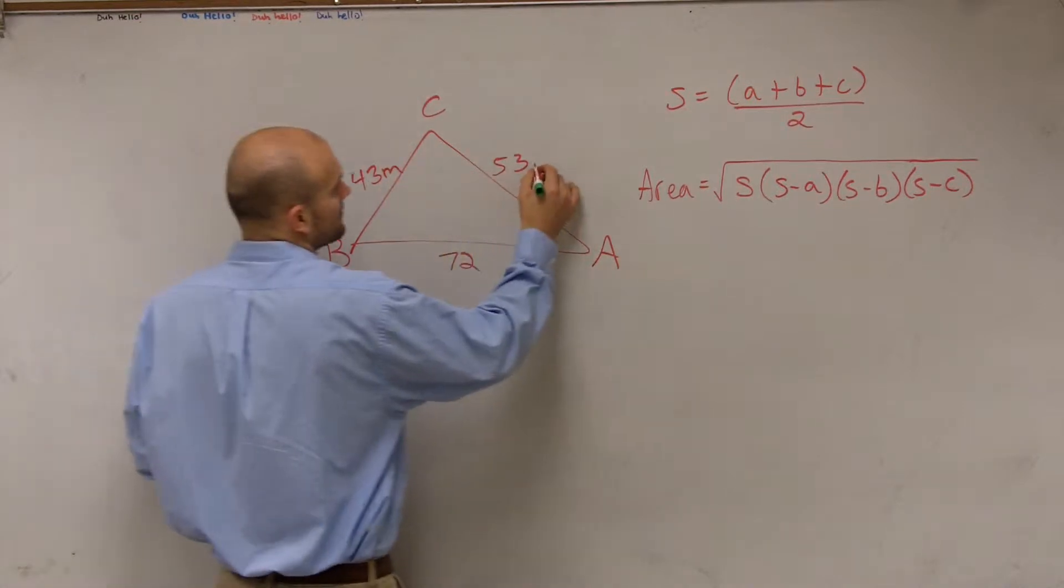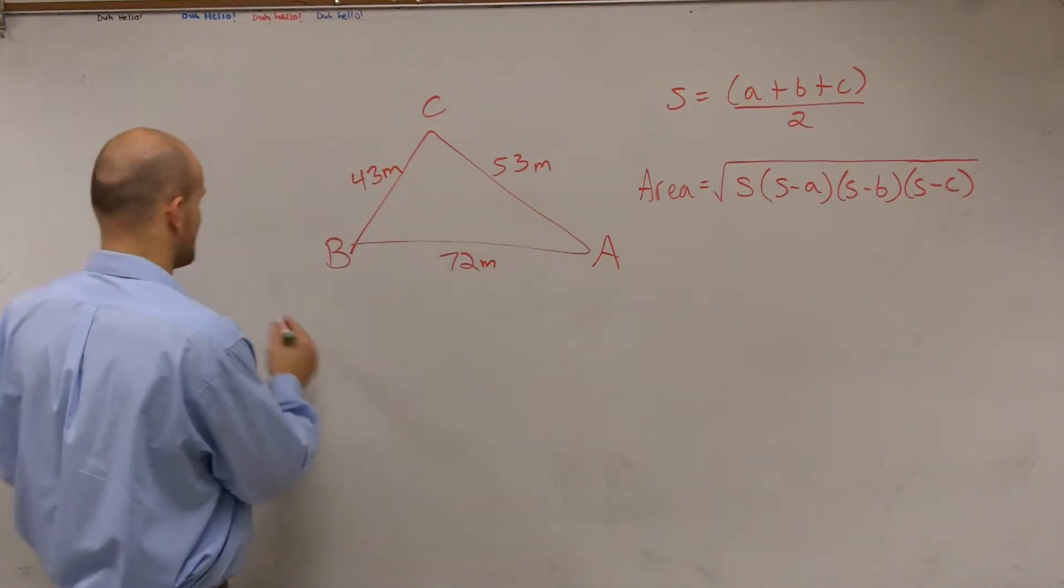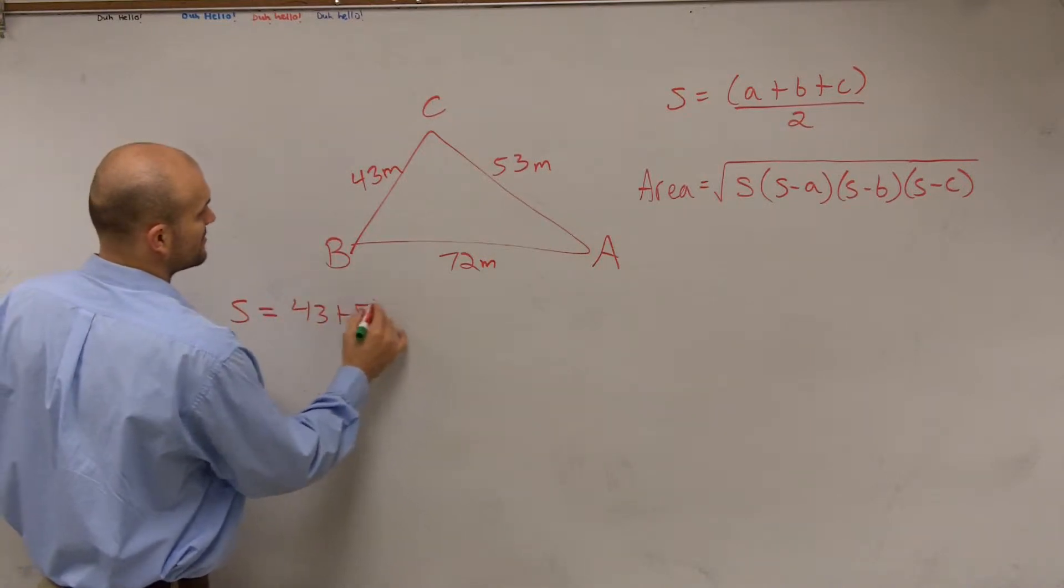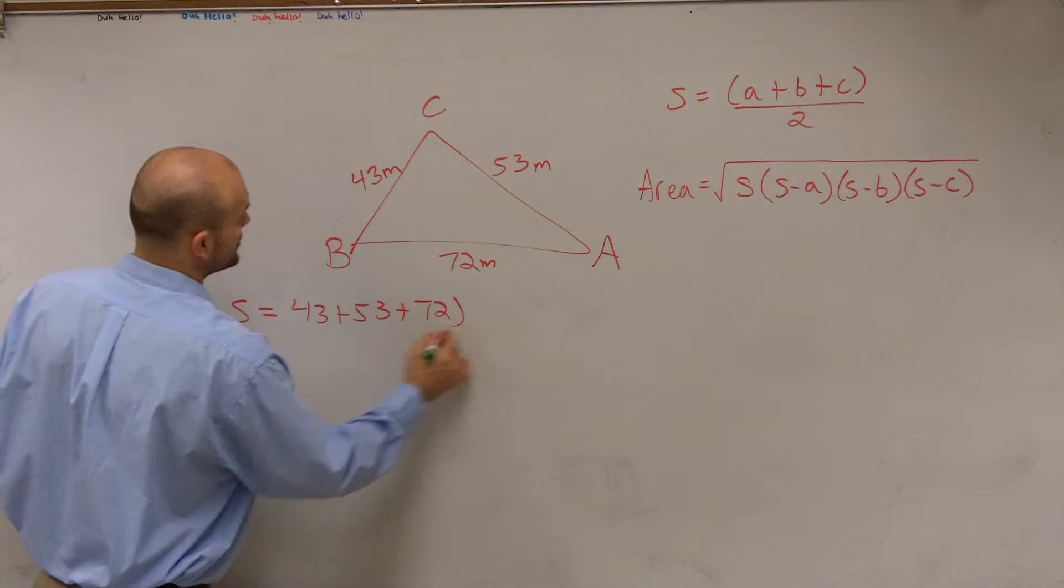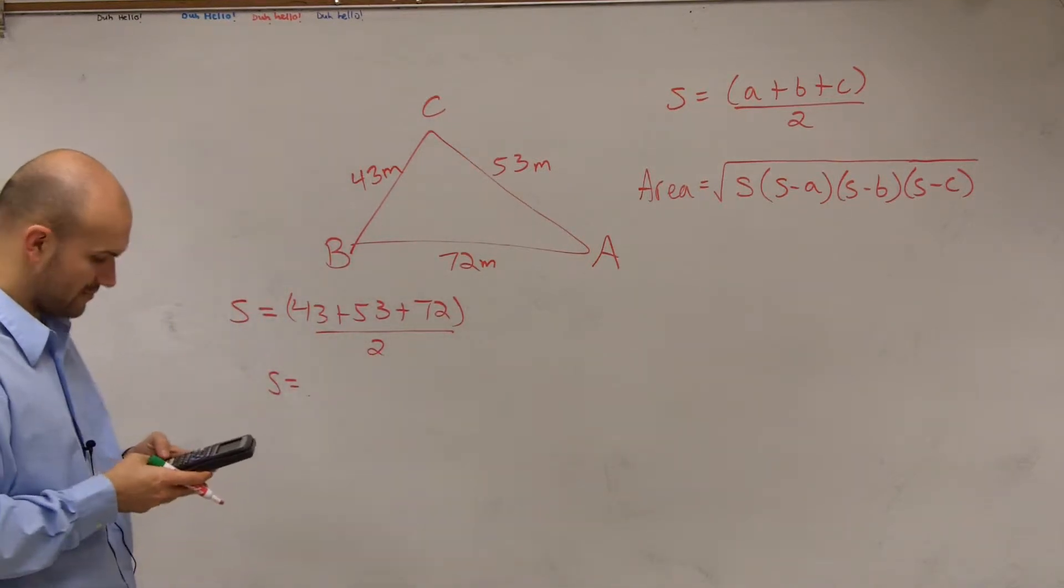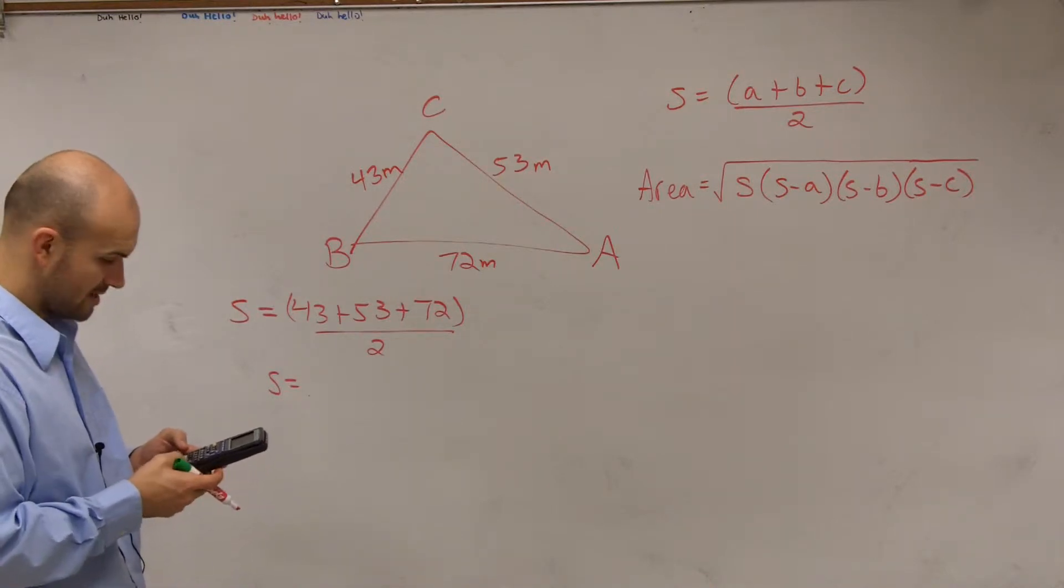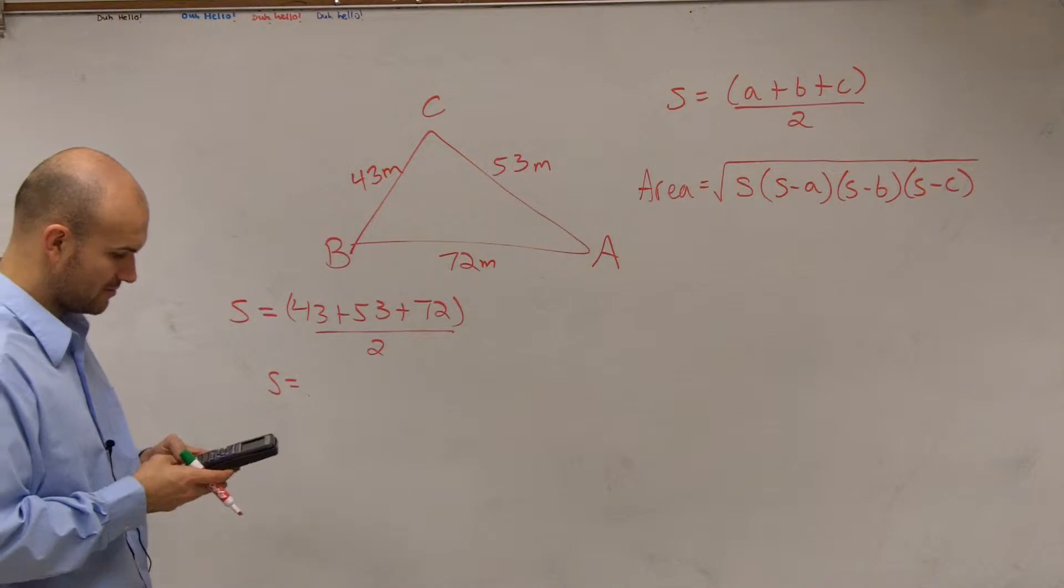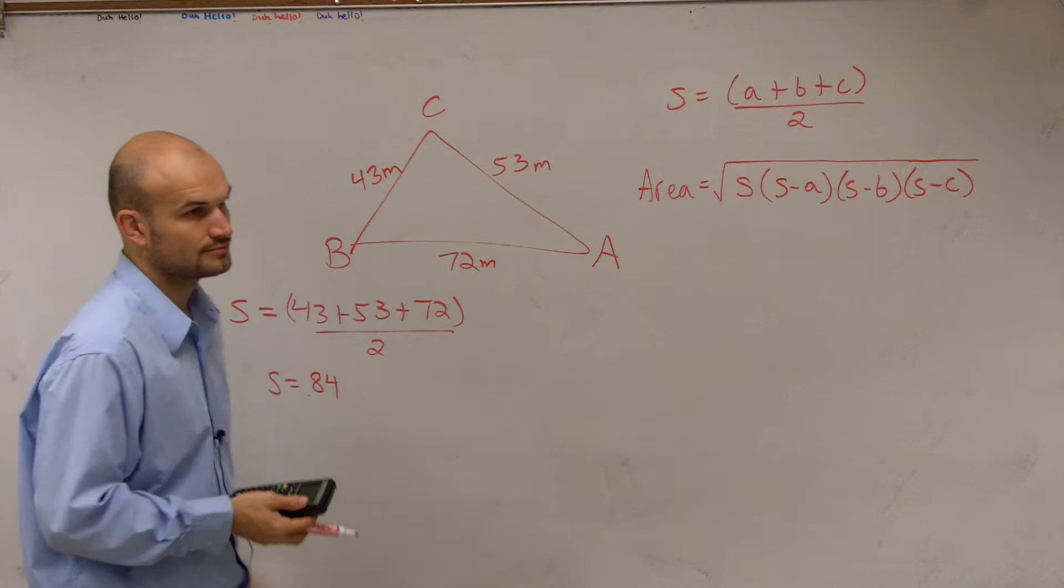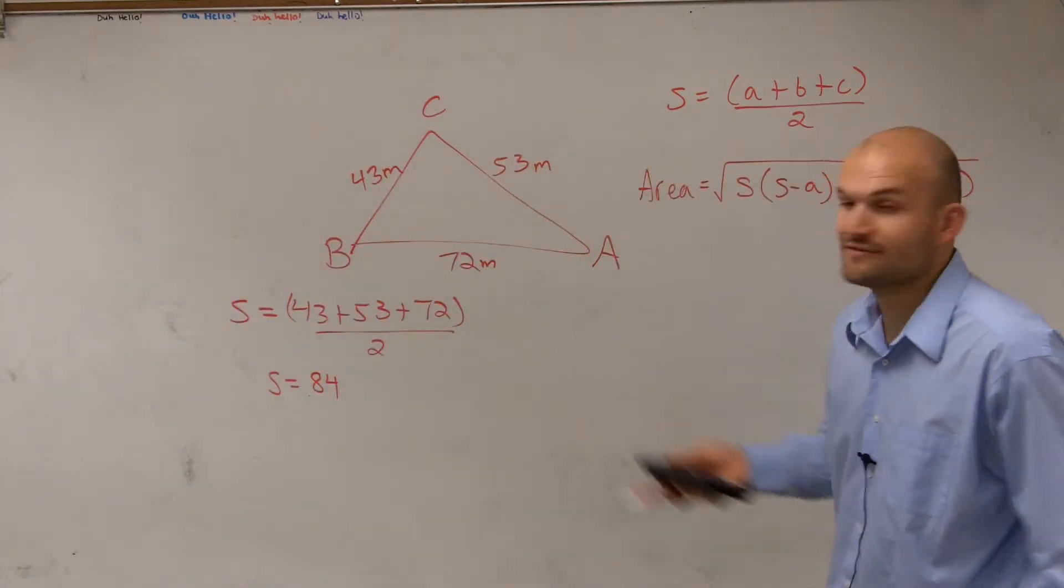Now, these are all actually in meters. Let's go with that. So the first thing is let's determine what s is. So s in our problem is going to be 43 plus 53 plus 72 divided by 2. So you just take 43 plus 53 plus 72, and then divided by 2, which is 168, then divided by 2 is going to be 84. So now once we have 84,